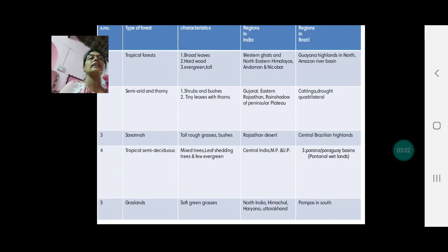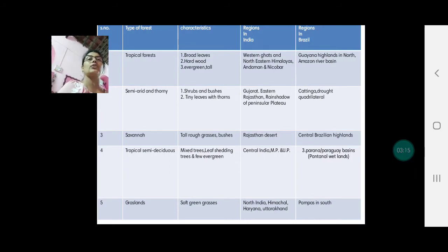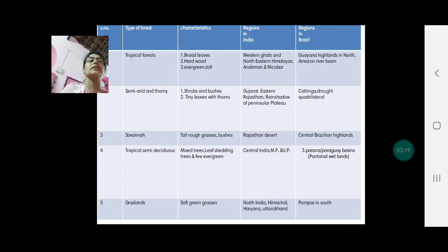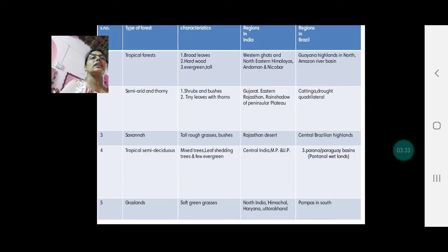The characteristics of these forests: tropical forests have broad leaves, hardwood type, and evergreen tall trees are found. Semi-arid and tawny forests are shrubs and bushes, normally with tiny leaves or thorns. Savannas have tall rough grasses. Tropical semi-deciduous forests have mixed vegetation — leaf-shedding trees and few evergreen trees are also found. Grasslands, that is the temperate grasslands, have soft green grass.